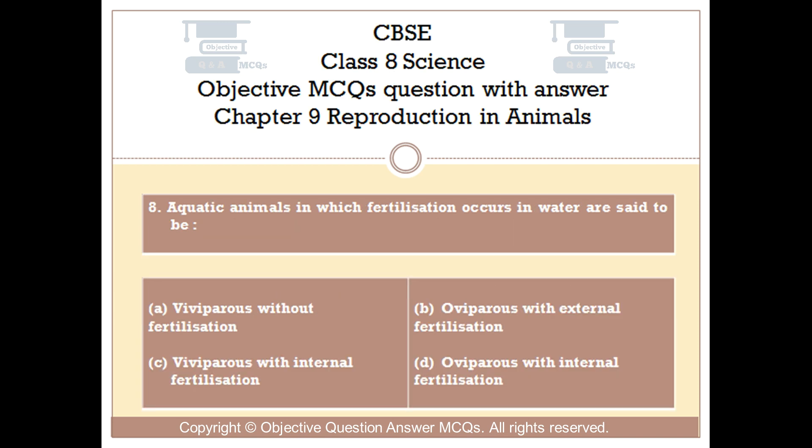Question number 8. Aquatic animals in which fertilization occurs in water are said to be: Option A: Viviparous without fertilization. Option B: Oviparous with external fertilization. Option C: Viviparous with internal fertilization. Option D: Oviparous with internal fertilization.